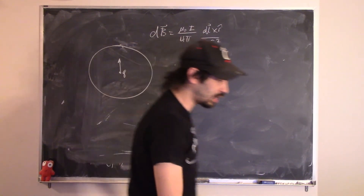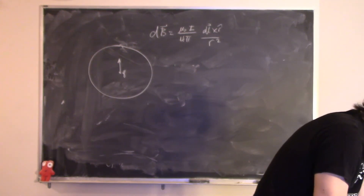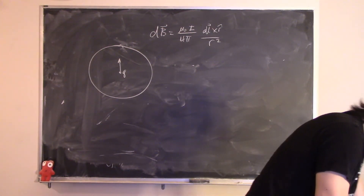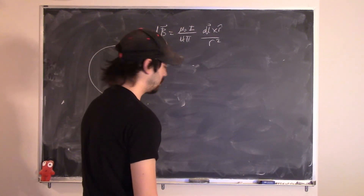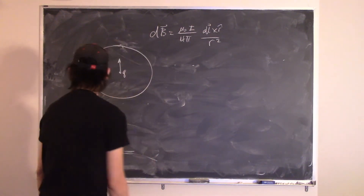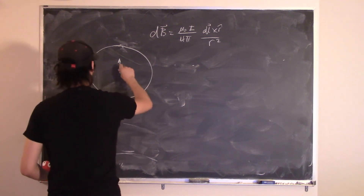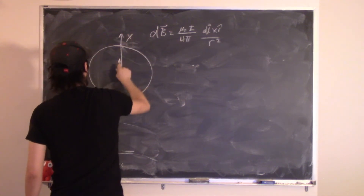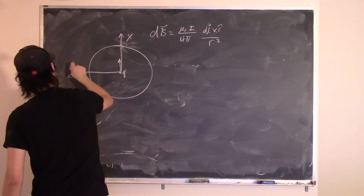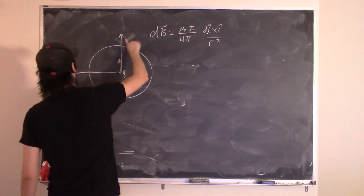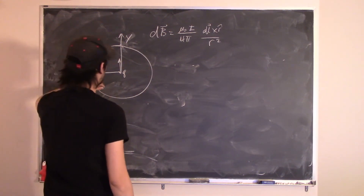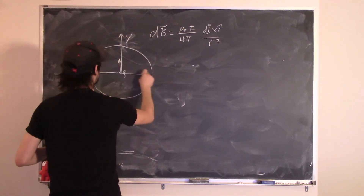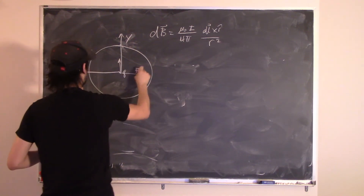Using the right-hand rule in reverse: fix the thumb in the direction of the force and point fingers in the direction of velocity — the fingers curl into the direction of B. This says B points out of the page. Then knowing B points out, we reverse-engineer to find the current direction: point thumb in direction of B, fingers curl in direction of current — so current goes around counterclockwise.